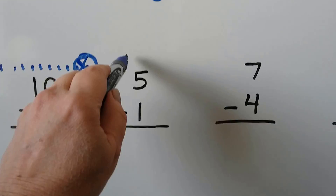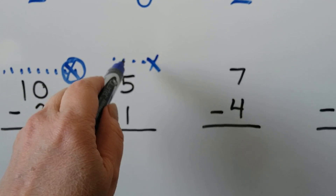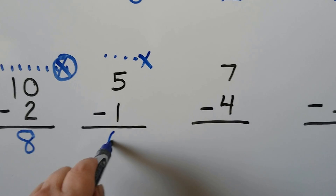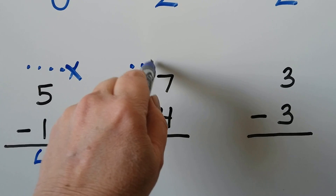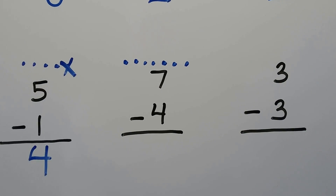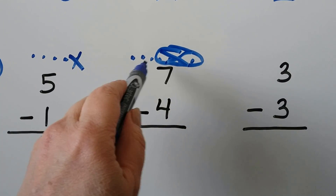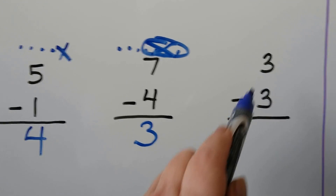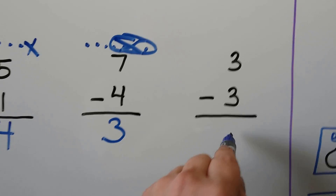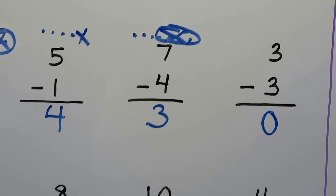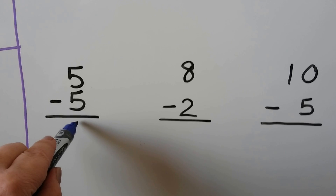Five take away one — we can make five dots and cross one out, leaving four. Seven minus four — we can make seven dots and take four away, leaving three. Three minus three — when we take all away, the answer is zero. Five minus five — when we take all away, the answer is zero.